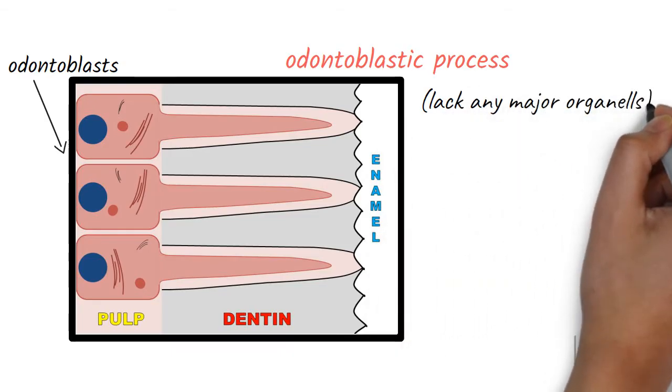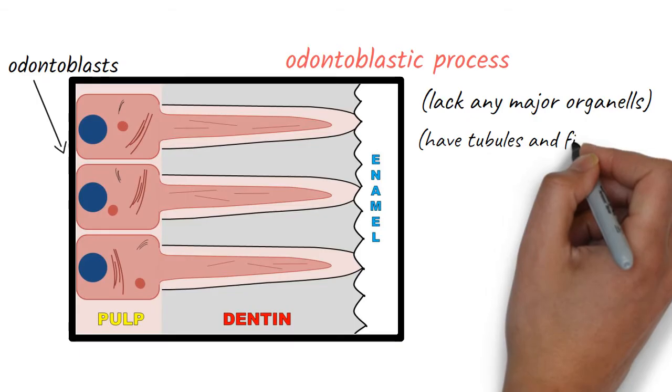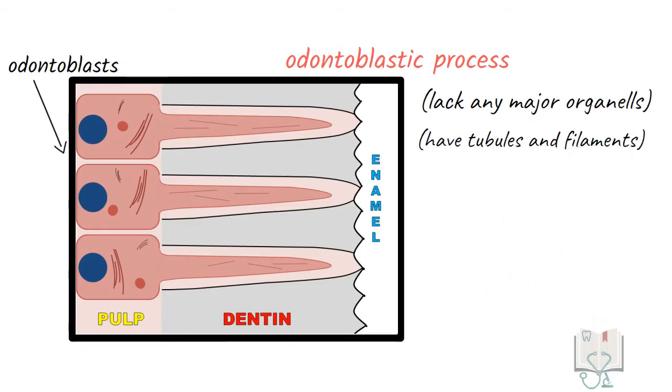They lack any major organelles like mitochondria or endoplasmic reticulum but have abundance of tubules and filaments. These processes help in maintaining the dentine.